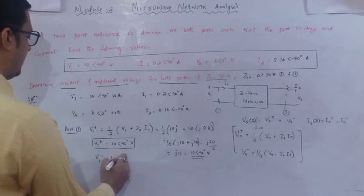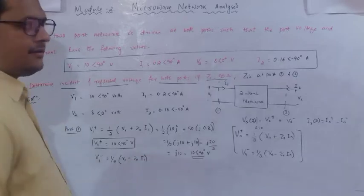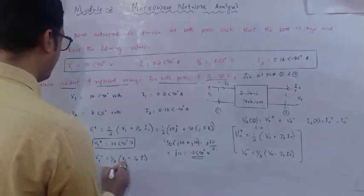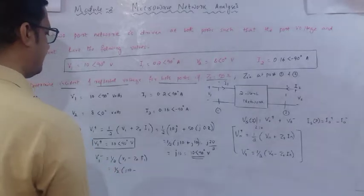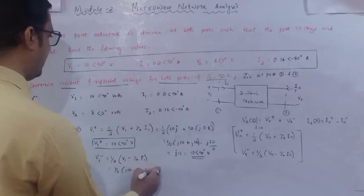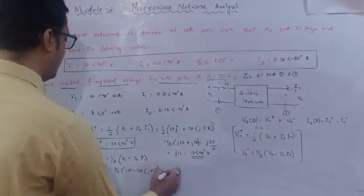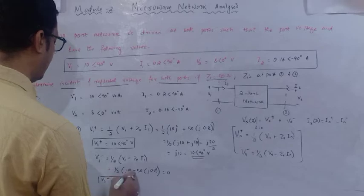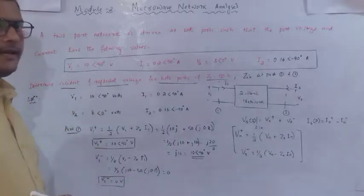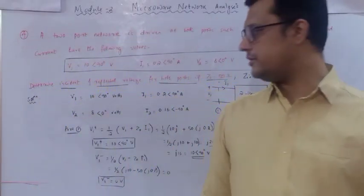For the reflected potential at port 1: V1− = (1/2)(V1 − Z0·I1) = (1/2)(j10 − 50·j0.2) = (1/2)(j10 − j10) = 0. Therefore the reflected potential at port 1 is 0, meaning the incident voltage is 10∠90° V and there is no reflection at port 1.